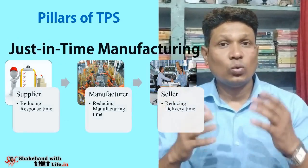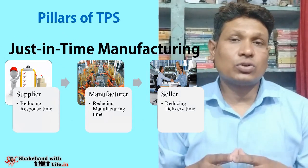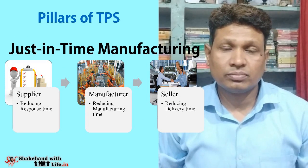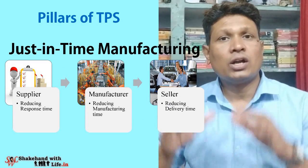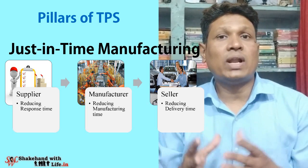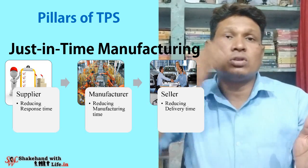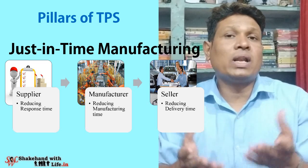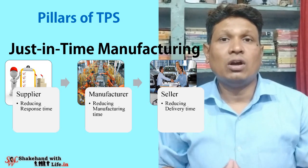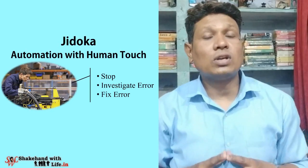Eiji Toyota and Taiichi Ohno introduced the concepts of Just-in-Time and Jidoka, which are known as the pillars of the Toyota production system. Just-in-Time manufacturing — also known as just-in-time production — is a methodology that reduces manufacturing times within the production system as well as response times from suppliers to customers.